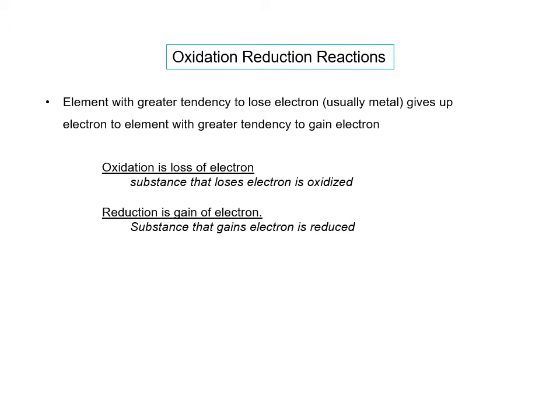Oxidation is loss of electron. Reduction is gain of electron. So the substance that loses an electron is oxidized and the substance that gains an electron is reduced. A good way to remember is OIL RIG: oxidation is loss, reduction is gain.